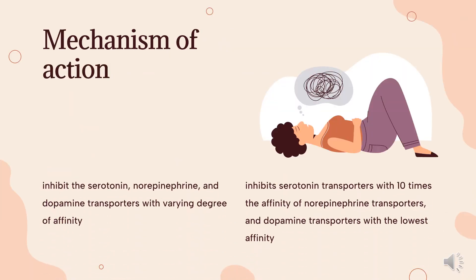Mechanism of Action: The exact mechanism of the antidepressant action of D-Svenlifaxine is unknown but is thought to be related to the potentiation of serotonin and norepinephrine in the central nervous system through inhibition of their reuptake. D-Svenlifaxine has been found to inhibit the serotonin, norepinephrine, and dopamine transporters with varying degrees of affinity.